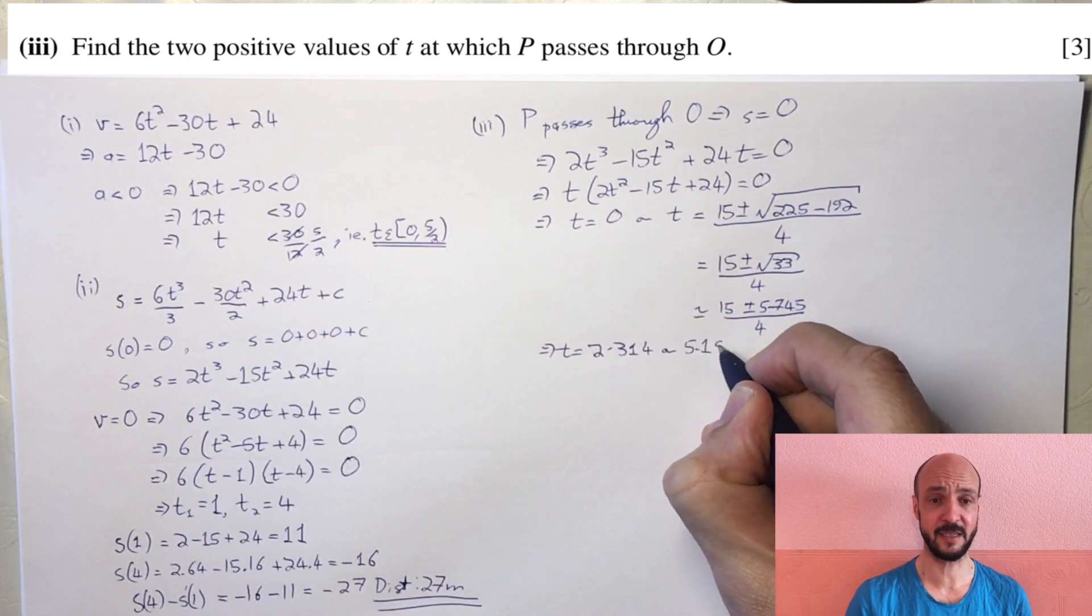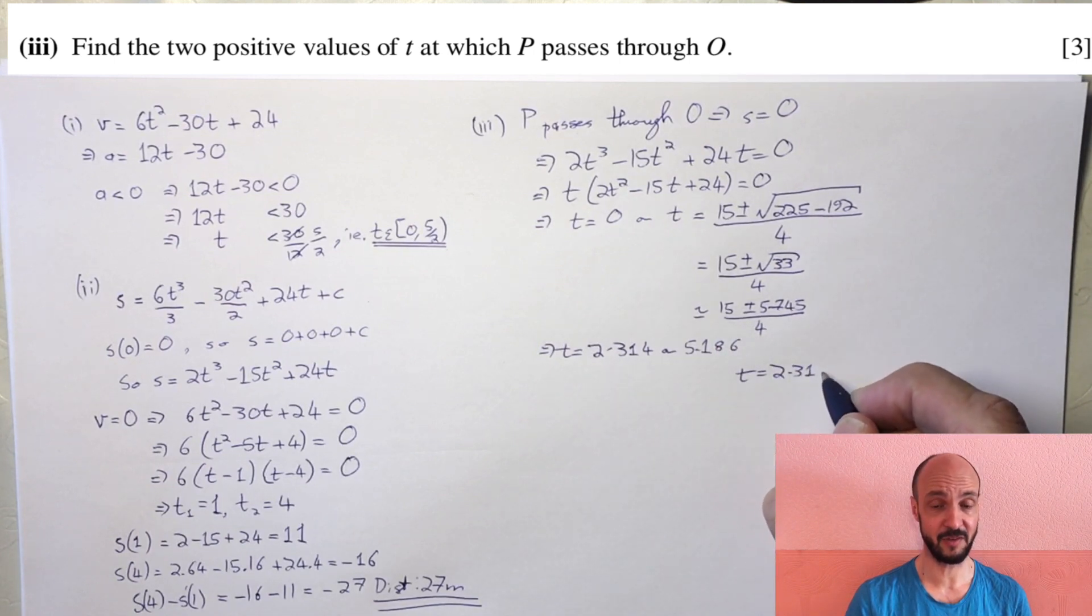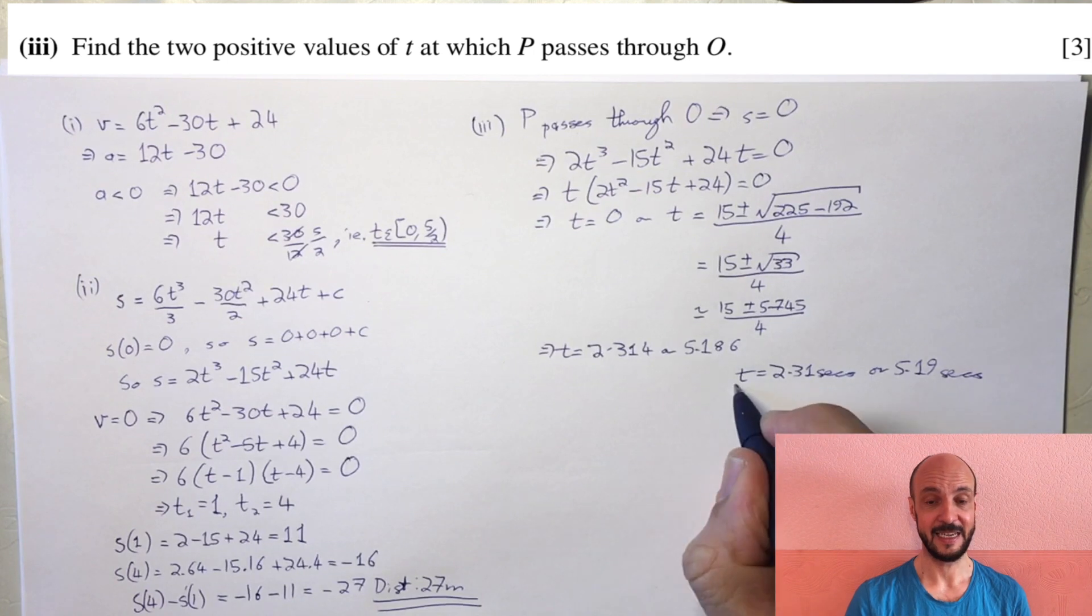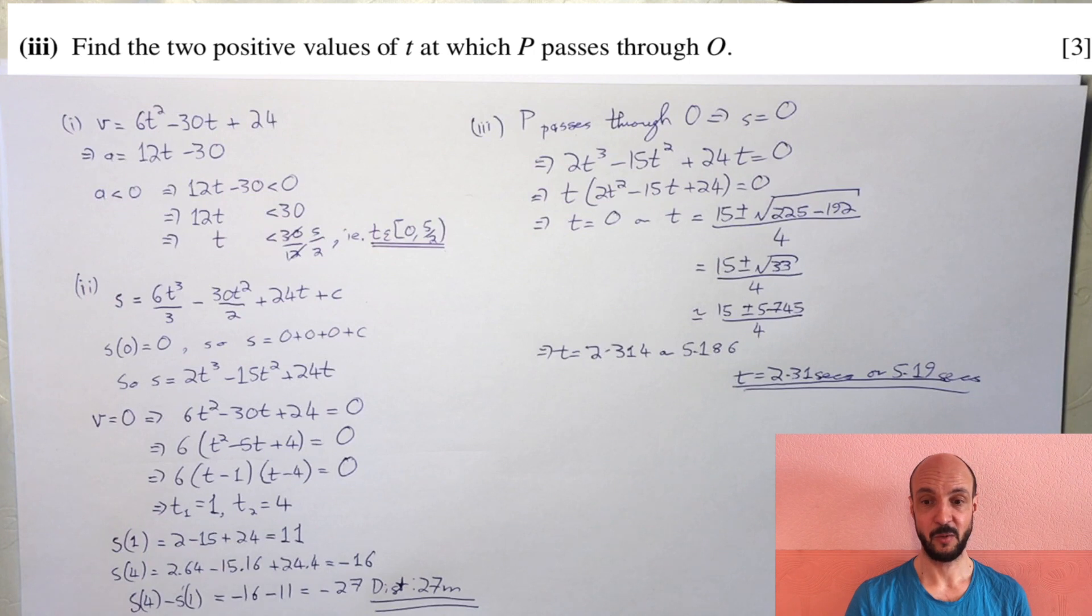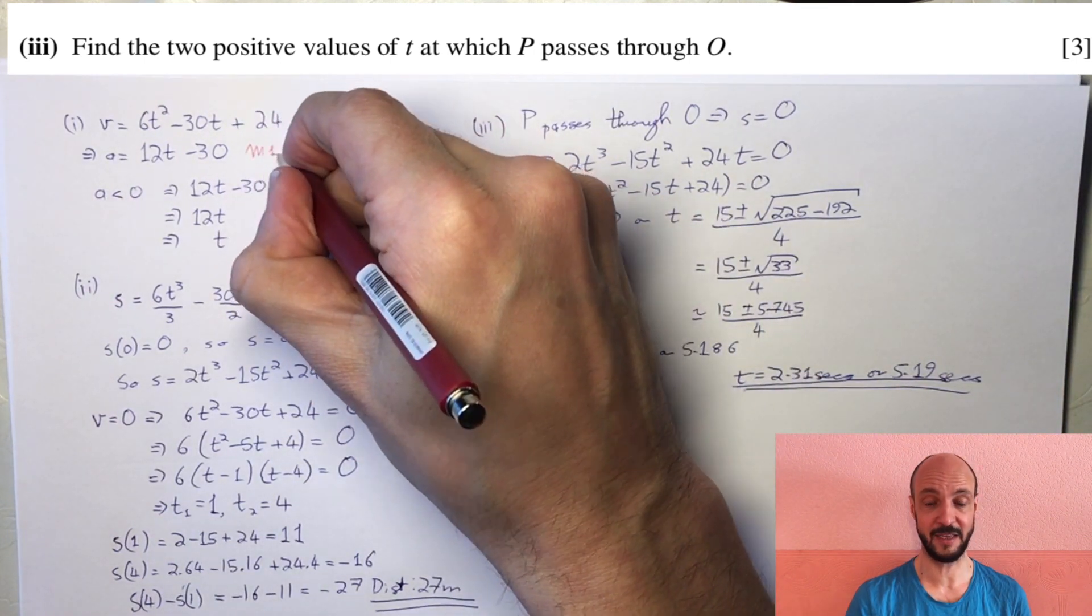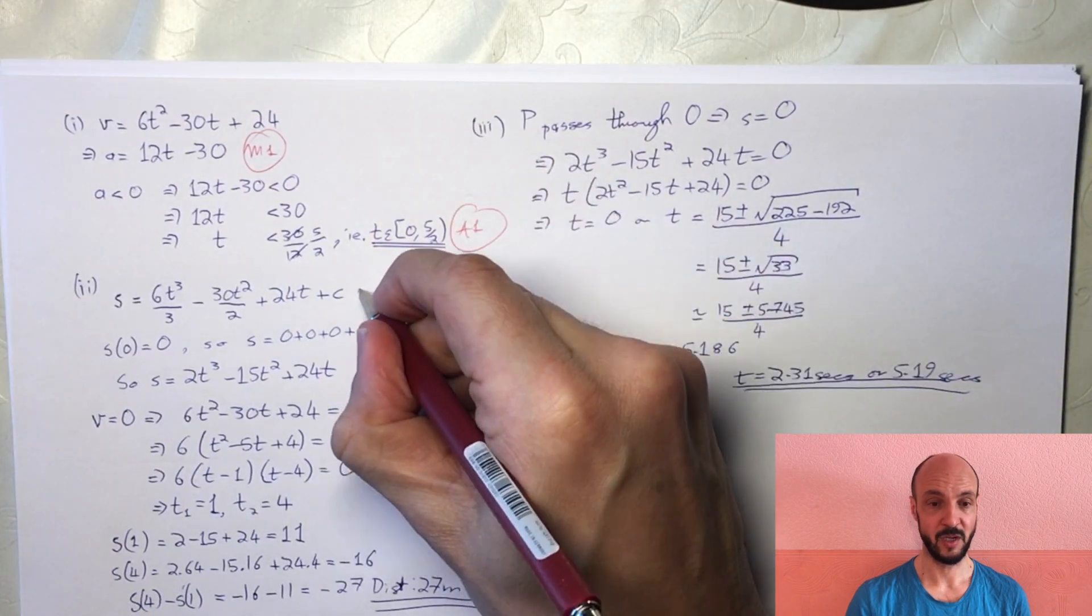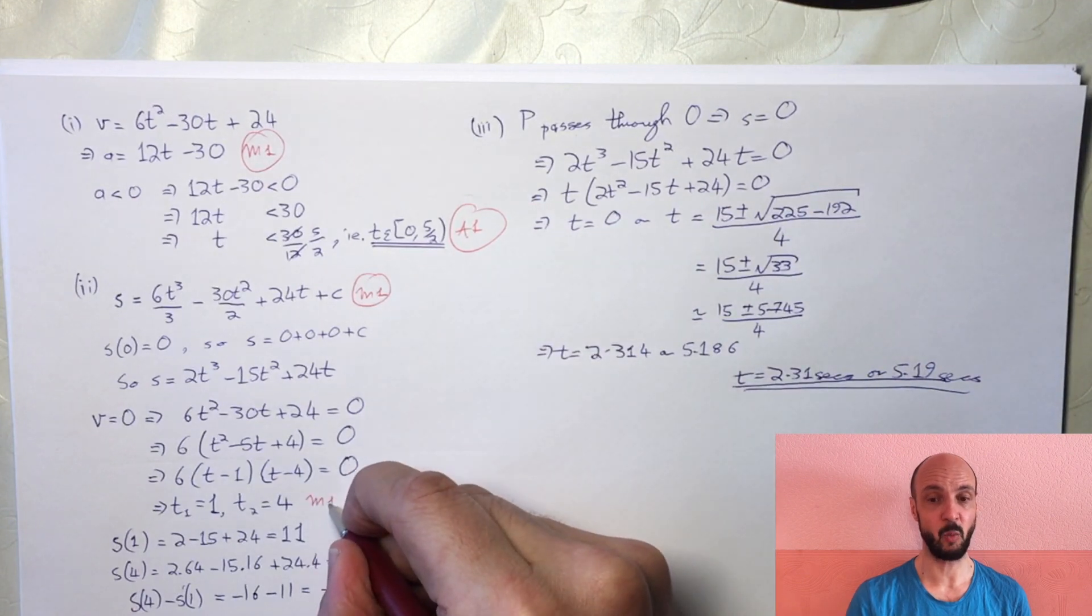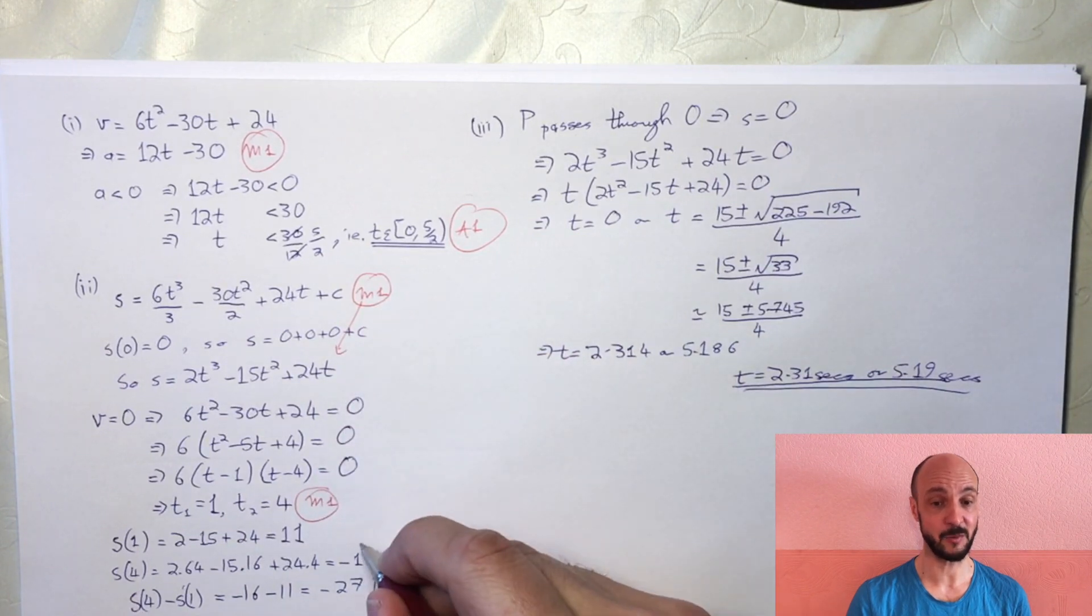Looking at the mark scheme: In part 1, there's a method mark for differentiating and an accuracy mark for the correct interval. In part 2, method marks for integrating, factorising to find t equals 1 and 4, and putting in the limits, plus an accuracy mark for 27 metres.